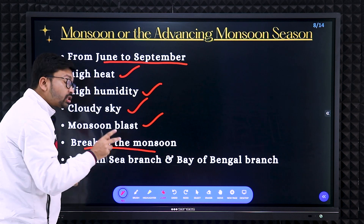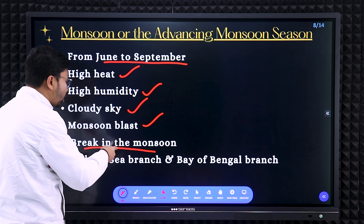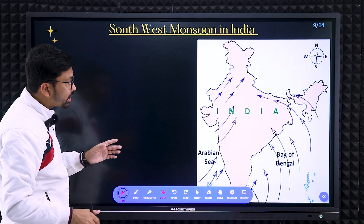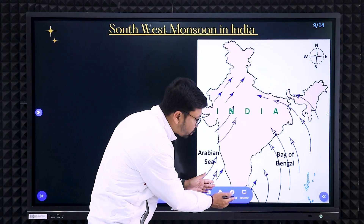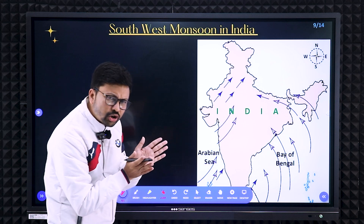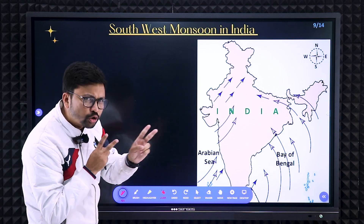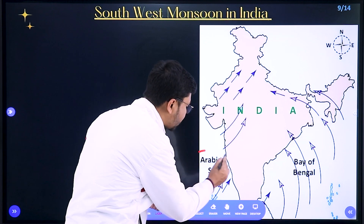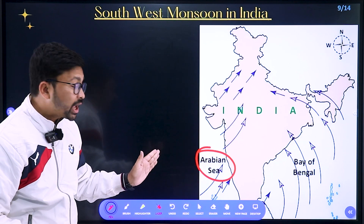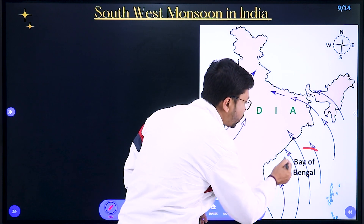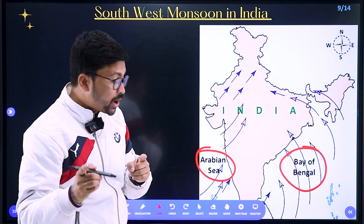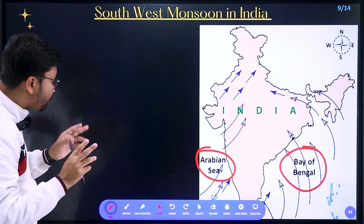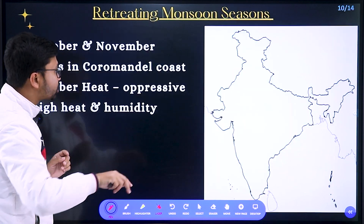The southwest monsoon is divided into two parts: the Arabian Sea branch and the Bay of Bengal branch. After coming to the southern part of India, the southwest monsoon divides — one part goes over the Arabian Sea, called the Arabian Sea branch, and another part goes over the Bay of Bengal, called the Bay of Bengal branch.